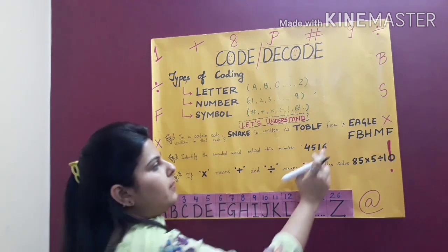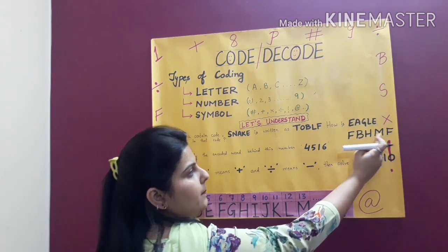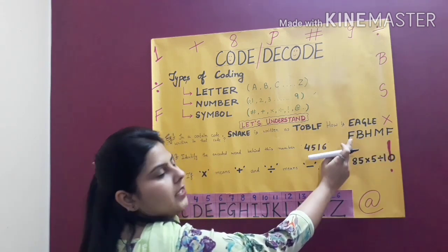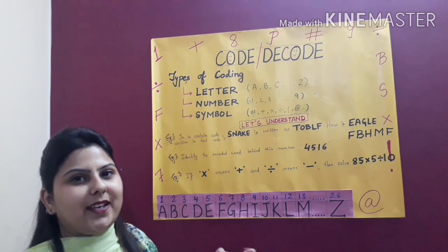So your encoded message is F, B, H, M, F. So EAGLE is encoded like this. So I hope this trick is clear to you.